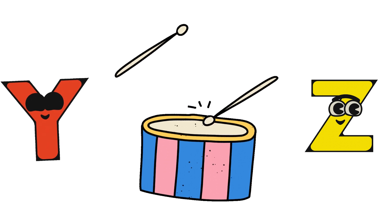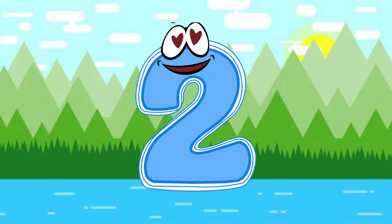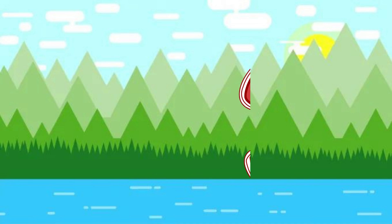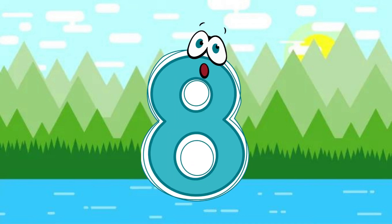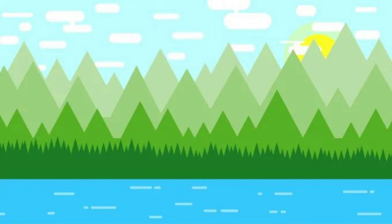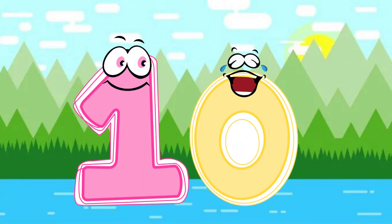T, Tomato, T. Tomato, T. Tomato. Numbers: one little, two little, three little numbers, four little, five little, six little numbers, seven little, eight little, nine little numbers, ten little numbers.